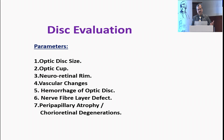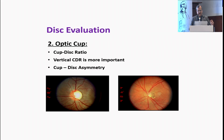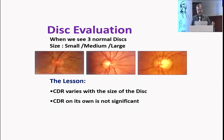When you see disc evaluation, you need to evaluate the disc in the following seven parameters. Most importantly, you need to make a forceful decision as to what is the size of the disc you are seeing. If you see the disc on the screen on the left with the spot size of 1.5 millimeters, you see a small disc, and on the other side you see a large disc. When you see these three discs, one on the left is the small disc, one in the center is the normal disc, and one on the right is the large disc.